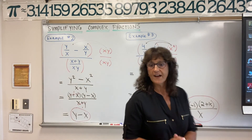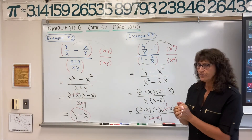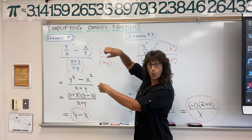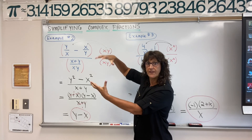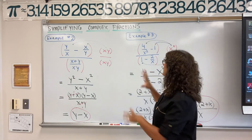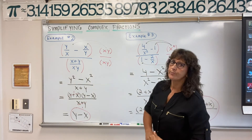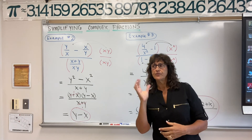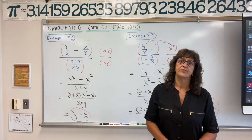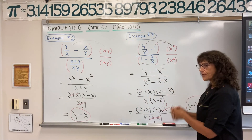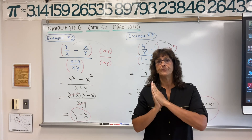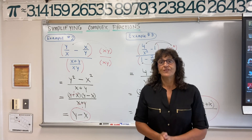So simplifying complex fractions — you have two different methods. Method one: take numerator and denominator, write them as one fraction by getting a common denominator, then treat it as a division problem. Method two: look at all the terms inside the complex fraction, pick the least common multiple of the denominators, multiply and distribute. Thank you so much for tuning in, and I hope this helps. See you soon.